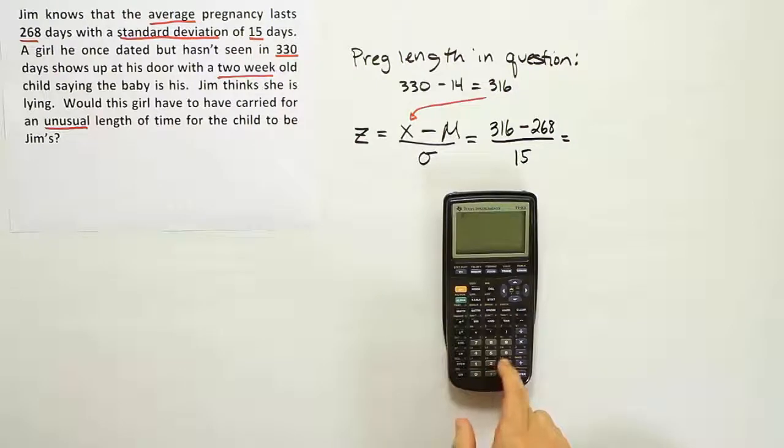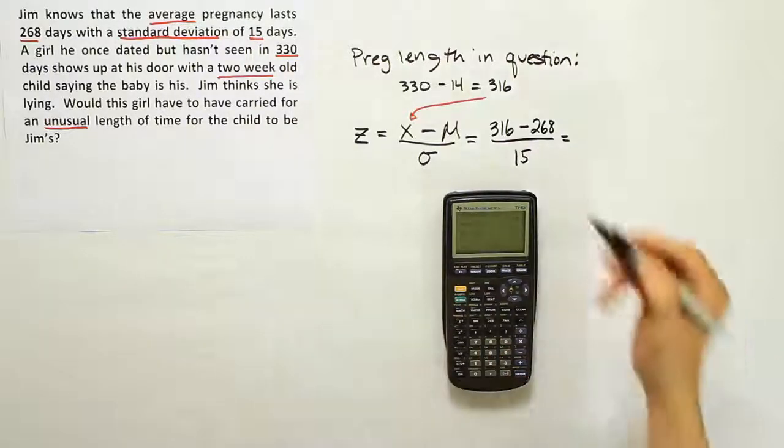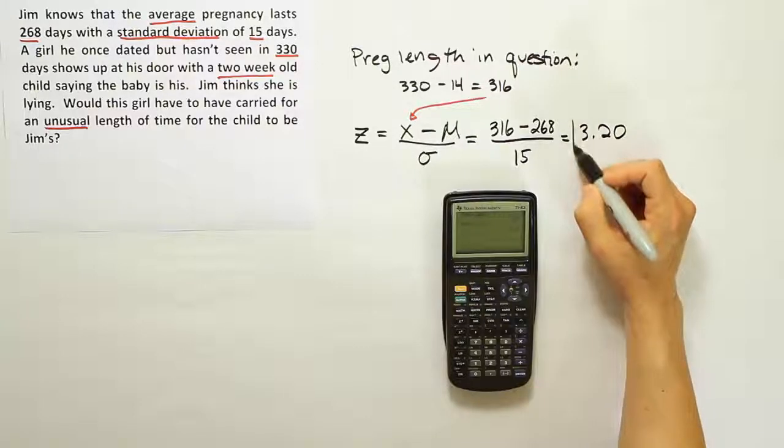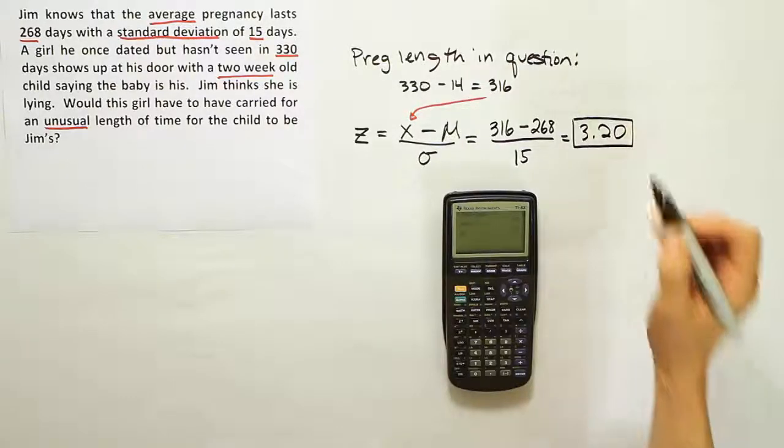So taking our calculator, we'll say 316 minus 268 divided by 15. So this gives us a total of 3.2 standard deviations away from the mean. 3.2 standard deviations away.